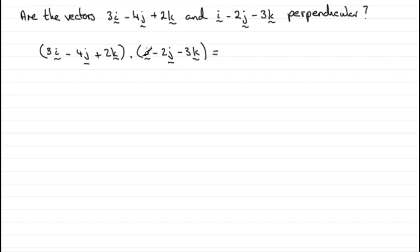So what do we get when we dot them? Well, we're going to have 3 times the 1 here. So we've got 3 times 1. And then we've got plus minus 4 times minus 2. Minus 4 times minus 2.